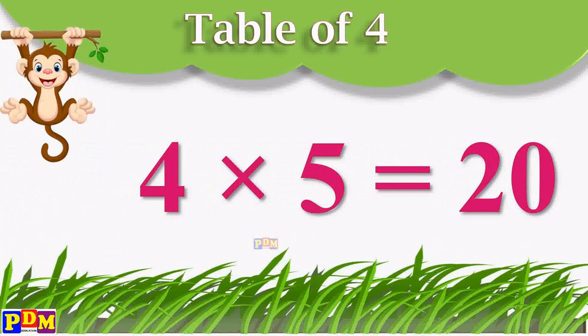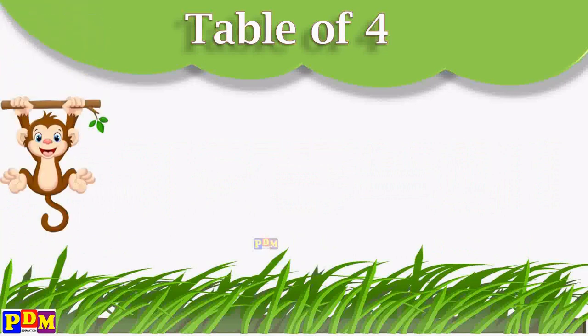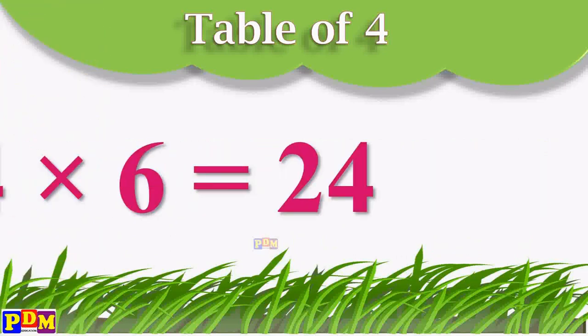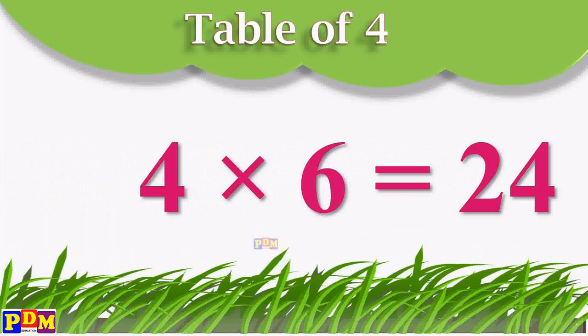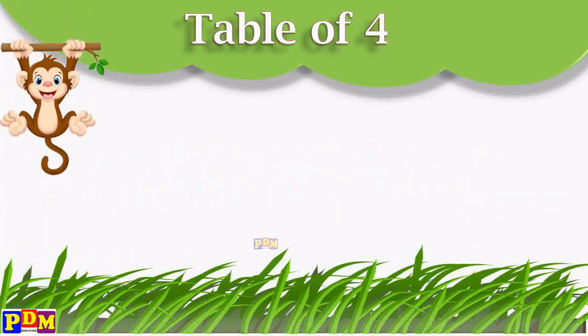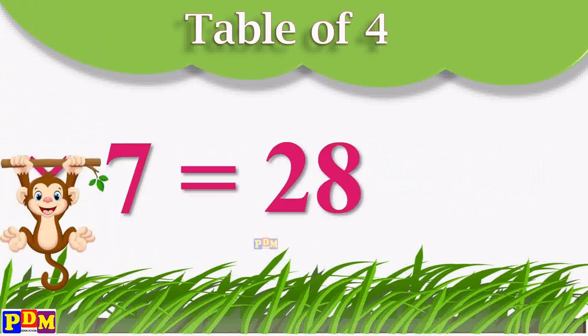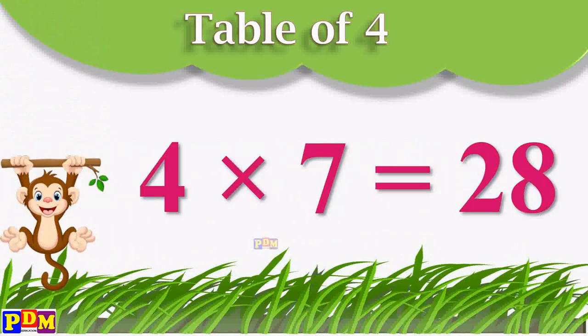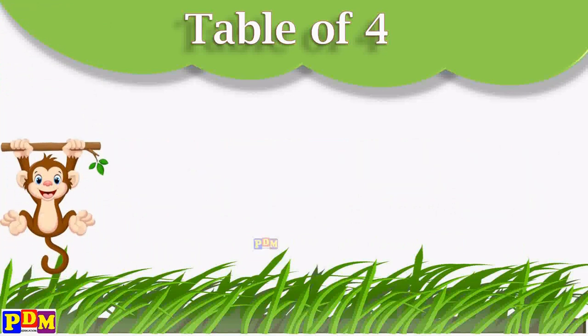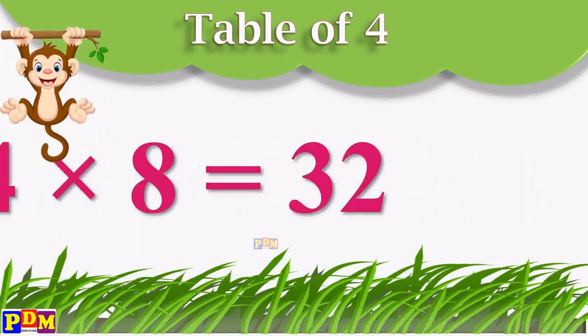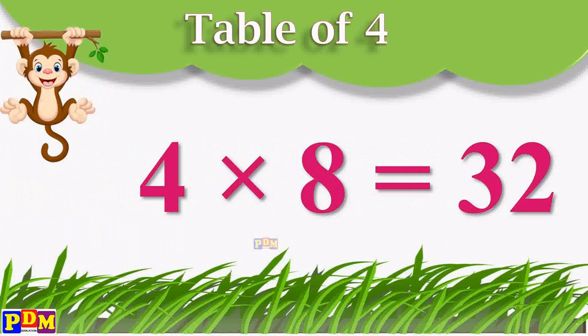Four fives are twenty. Four sixes are twenty-four. Four sevens are twenty-eight. Four eights are thirty-two.